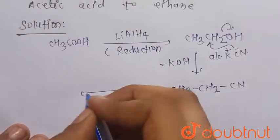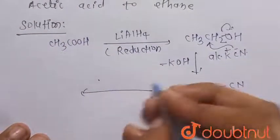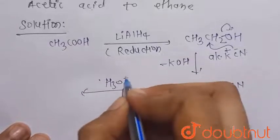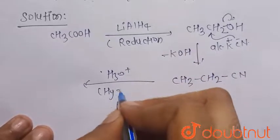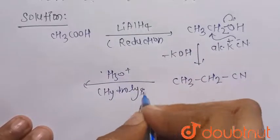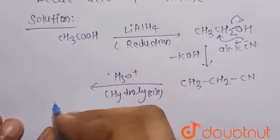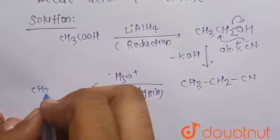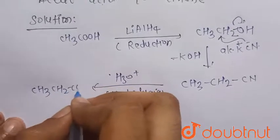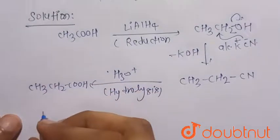Now it undergoes complete hydrolysis. We know that complete hydrolysis of the cyanide changes into the carboxylic acid. So there is formation of CH3CH2COOH, that is propanoic acid.